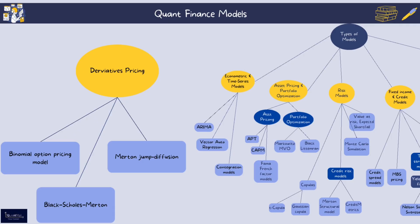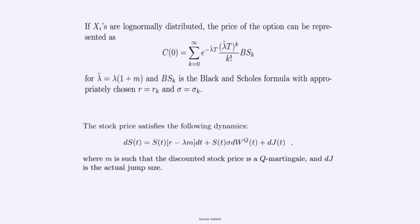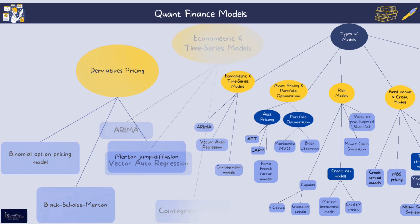Another common model is the Merton Jump Diffusion model — an extension of the Black-Scholes model that incorporates sudden discrete jumps in asset prices. It captures events like earnings announcements and economic news. This model combines continuous diffusion with a jump process to better reflect real market behaviors.